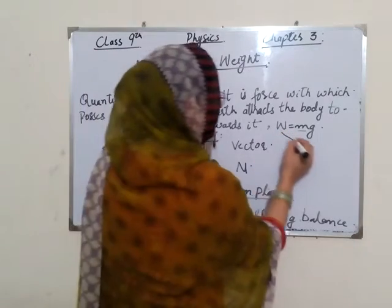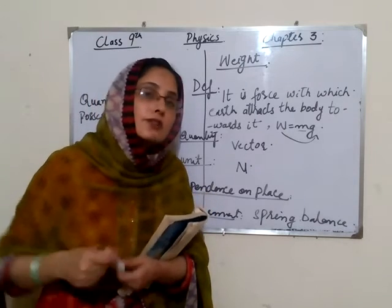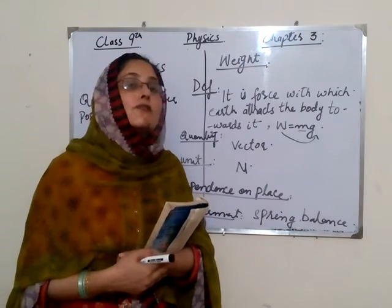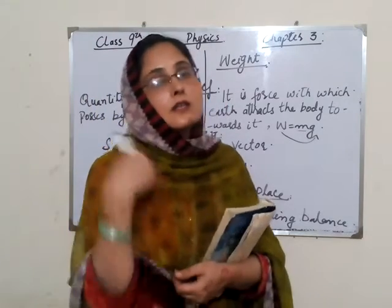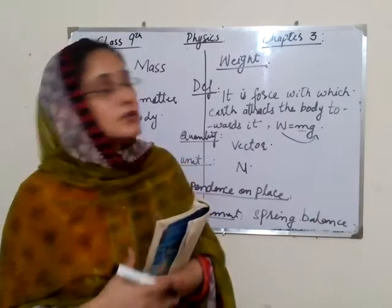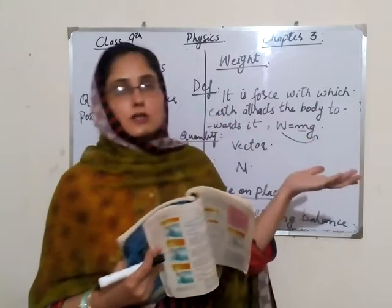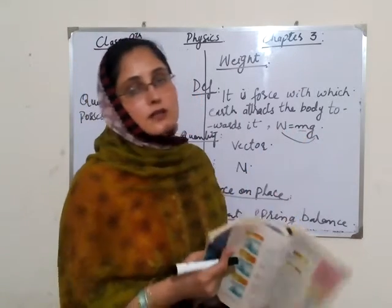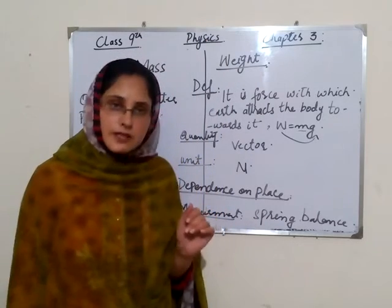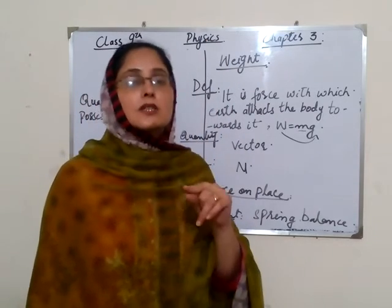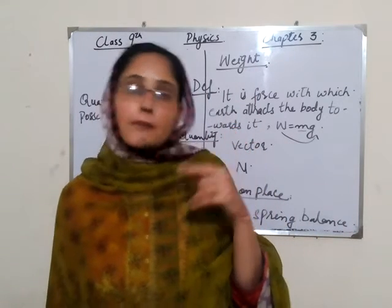Weight directly depends upon gravitational acceleration (g). Where gravitational acceleration is more, weight is more. Closer to the Earth, g is larger; farther from the Earth, g becomes smaller, and therefore weight also becomes smaller, because weight directly depends on g, the acceleration due to gravity.